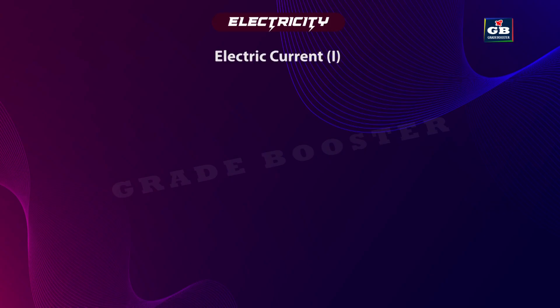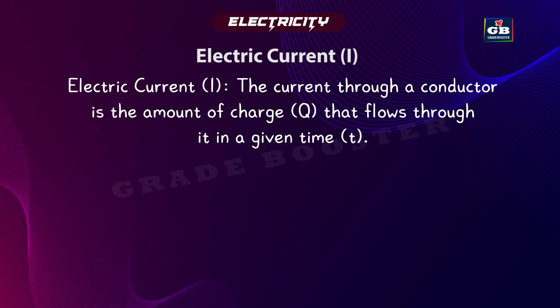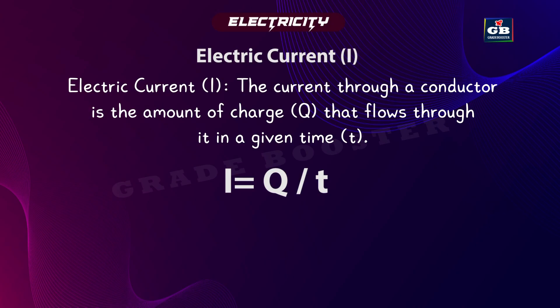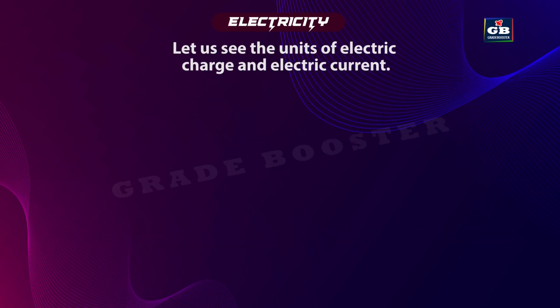Now let's see how electric current is expressed. Electric current I: the current through a conductor is the amount of charge Q that flows through it in a given time T. It is given by the formula I = Q / T, where I means electric current, Q means electric charge, and T is time.